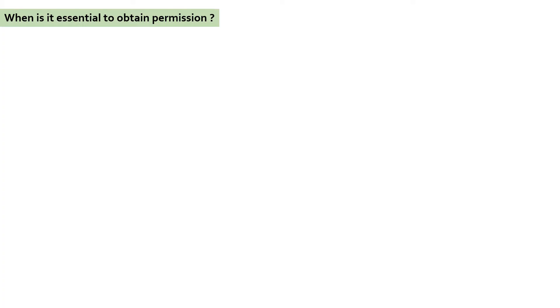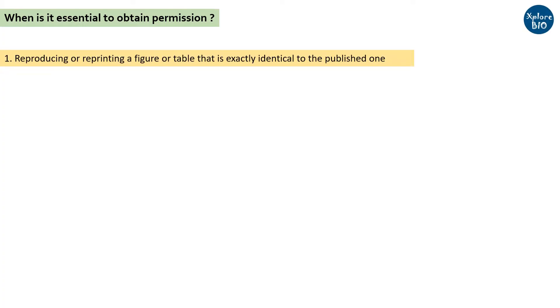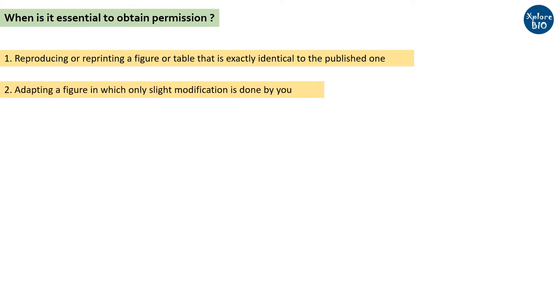Now let's see when it is essential for you to obtain permission from the copyright holder or the publisher. When you reproduce or reprint a figure or table that is exactly identical to the published one, or when you are adapting a figure which is only slightly modified, you must obtain permission to reuse it from its original publisher or the copyright holder.